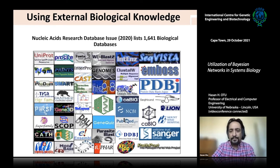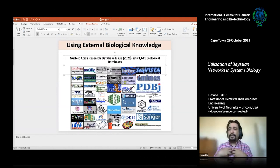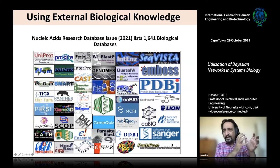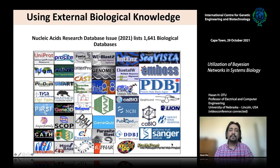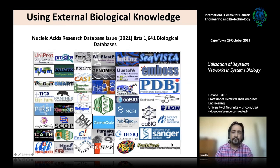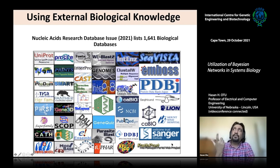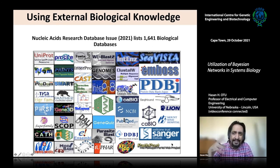We thought when learning networks from data, we need guidance — and the way to do it is to use external knowledge. If I'm trying to build an interaction network from experimental data, why solely rely on the experiment and ignore all existing scientific knowledge? The 2021 Nucleic Acids Research database issue listed 1,641 biological databases — a rich source of external knowledge.